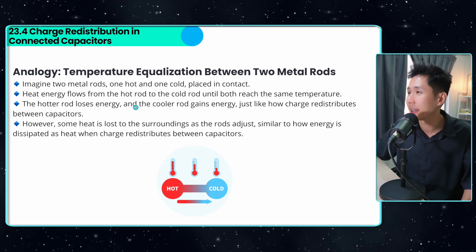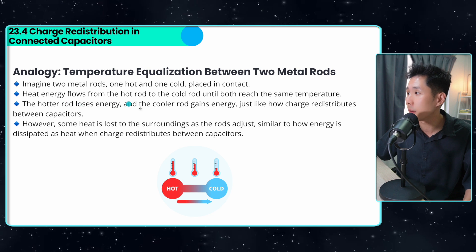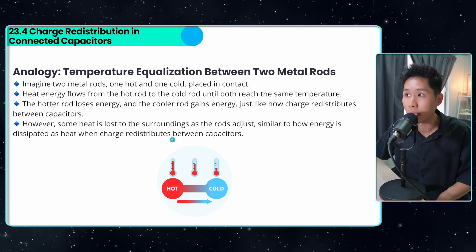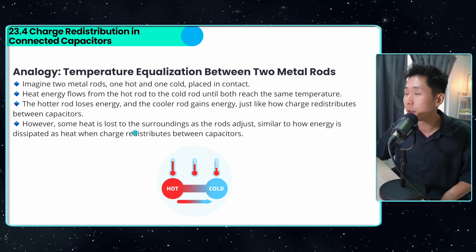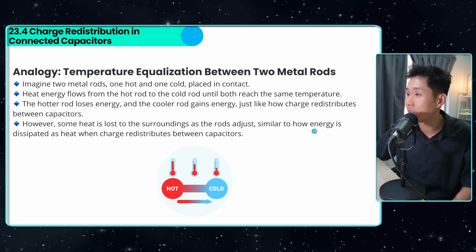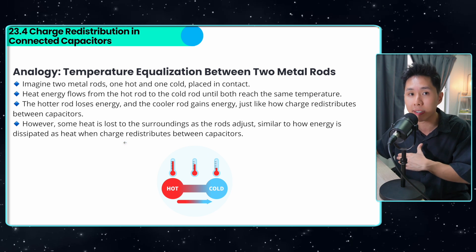An analogy I can think of is you have two metal rods here, one hot and one cold. Heat will flow from the hot rod to the cold rod until both rods reach the same temperature. And throughout the process, some heat will be lost to the surrounding. And similarly, this is also how energy will be dissipated as heat when charge redistributes, meaning some energy will be lost.